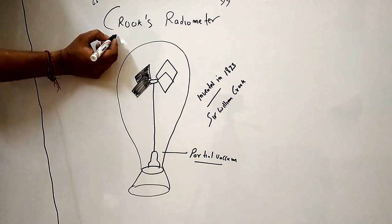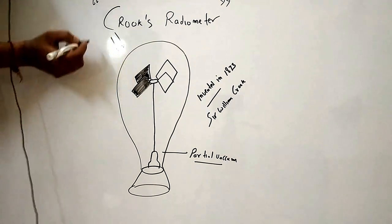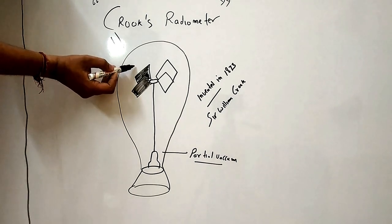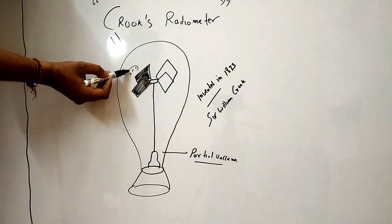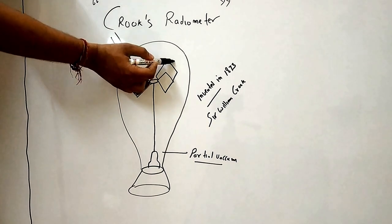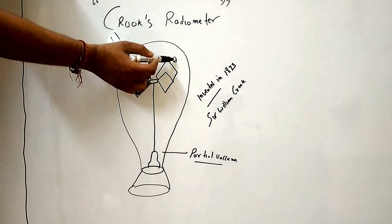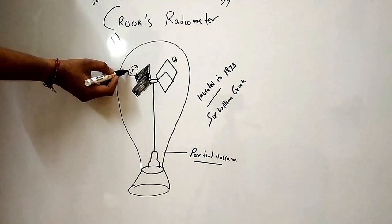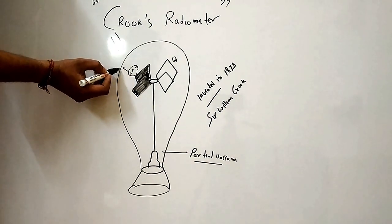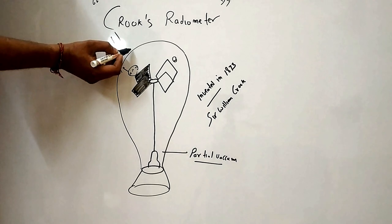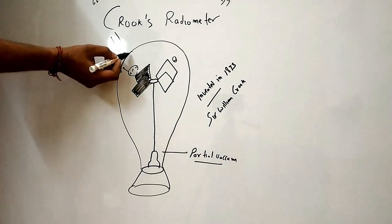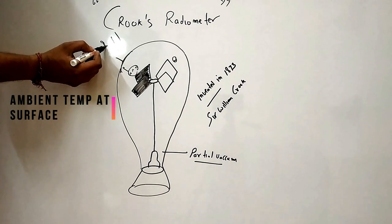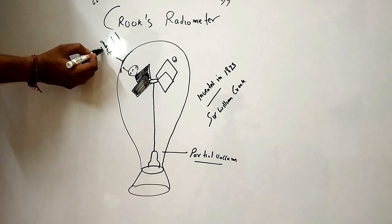When we add light source, the black side will absorb more energy. The molecules in contact with this surface will be much more energetic than those near the white side. This affects the ambient temperature.